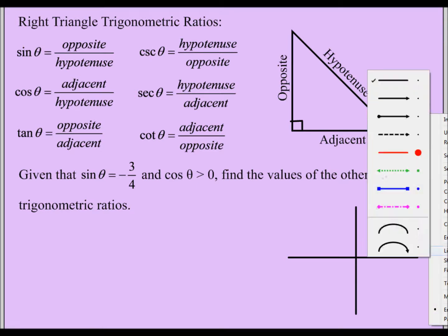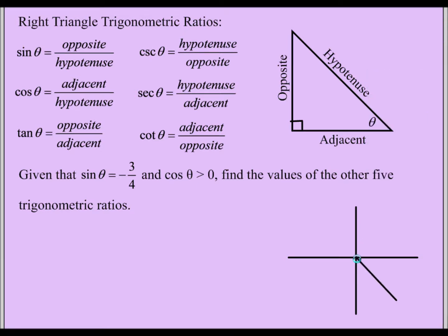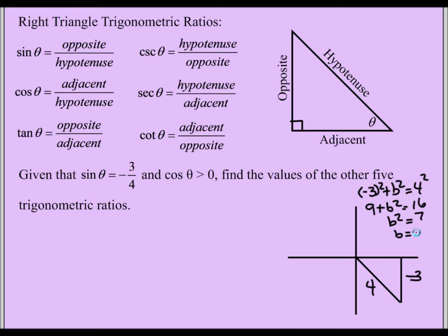I'll draw my reference triangle in quadrant IV and label everything I know: y is -3 and the hypotenuse is 4. I need to find the x value using the Pythagorean theorem: (-3)² + b² = 4², giving 9 + b² = 16, so b² = 7, and b = √7. Since cosine is positive, I use the positive square root of 7. Theta is between the x-axis and the terminal side.